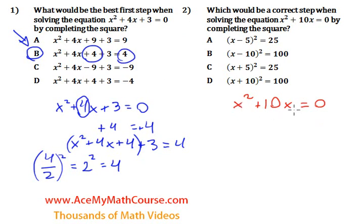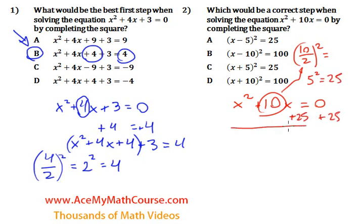First step will be to take the 10 divided by 2, then squared. 10 divided by 2 is 5, 5 squared is 25. So we're going to add 25 to both sides of the equation. We're going to have x squared plus 10x plus 25 equals 25.